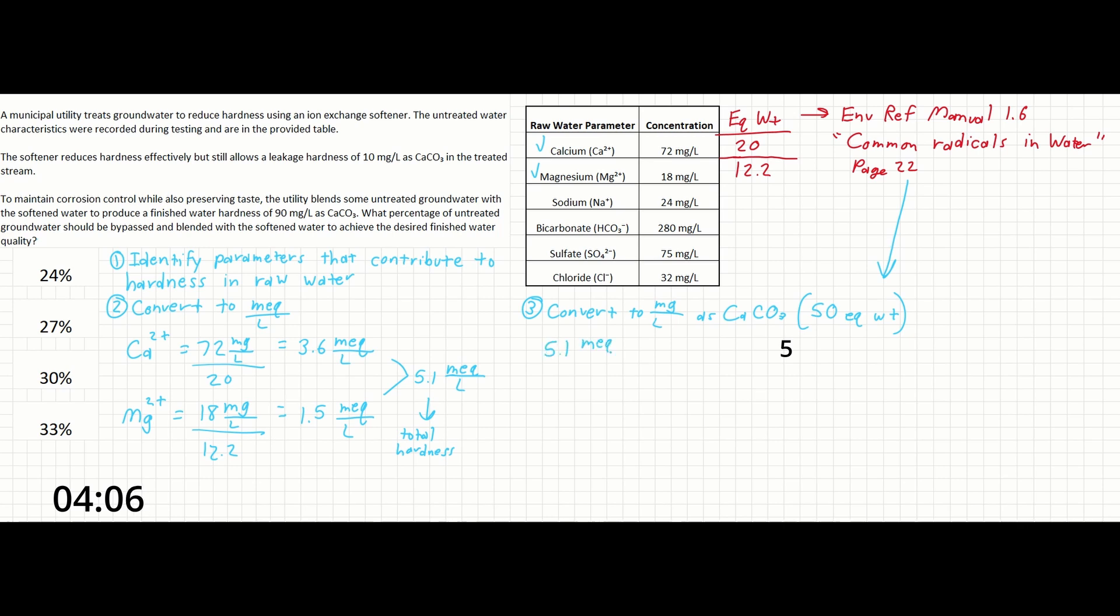To do this, we can multiply the total milliequivalents per liter by CaCO3's equivalent weight of 50, also found in the reference manual. 5.1 milliequivalents per liter times 50 gives us just about 255 milligrams per liter as CaCO3. That's going to be the raw water hardness.